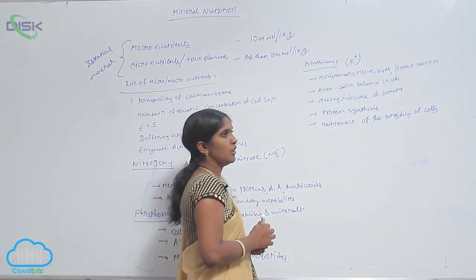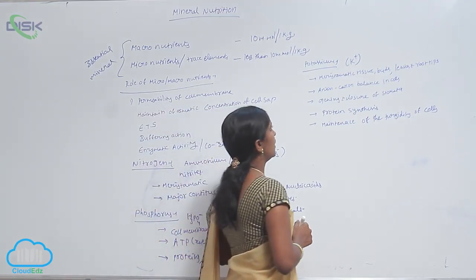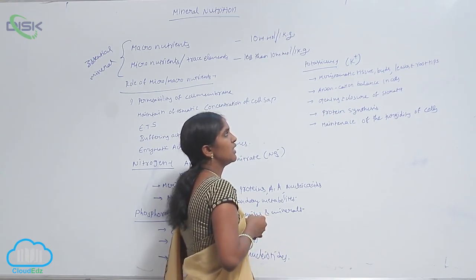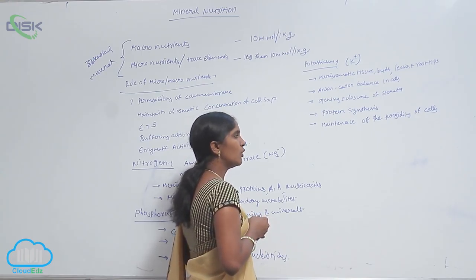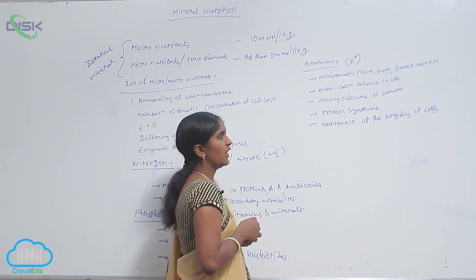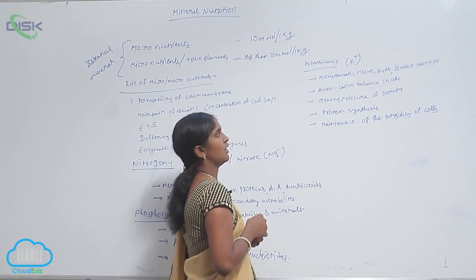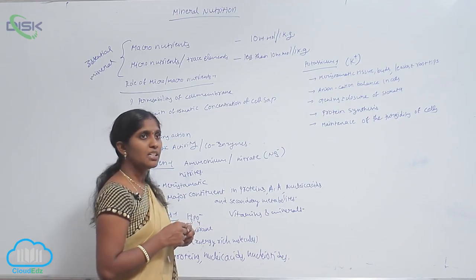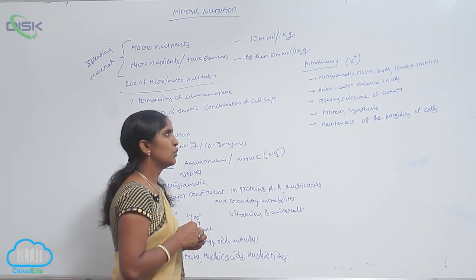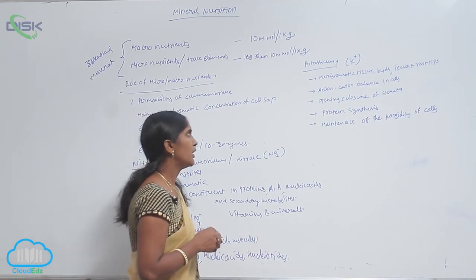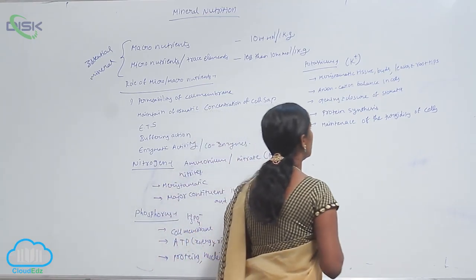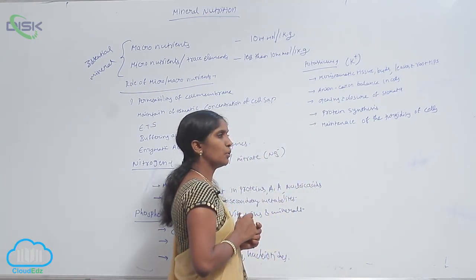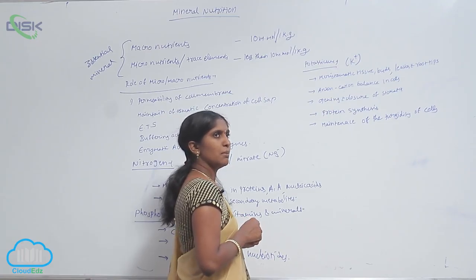Potassium is observed in the form of K plus ions. The K plus ions work to maintain the cation balance in the cells. It is also the most required ion for meristematic tissue, buds, leaves, and root tips for their multiplication.